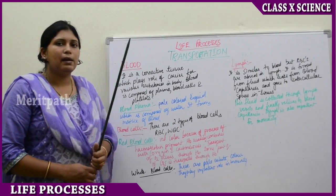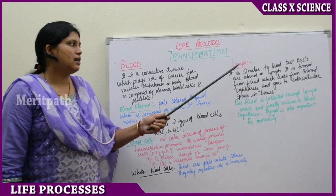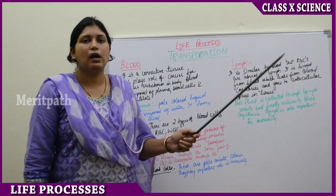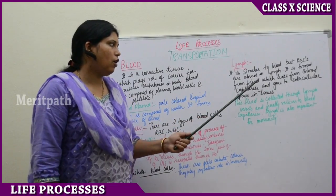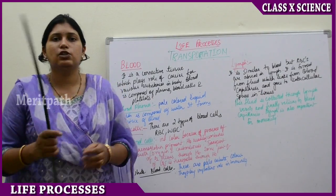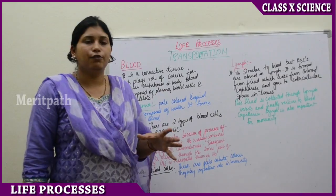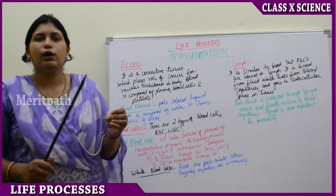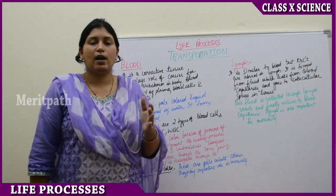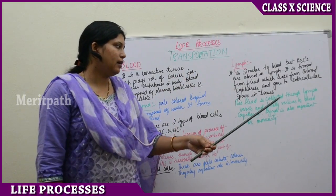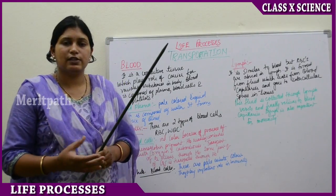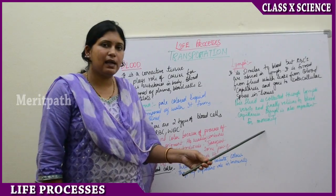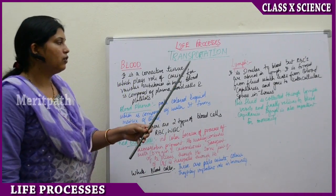Platelets are important for the coagulation of blood. Lymph is similar to blood but RBCs are absent, giving it no red color. It is formed from fluid that leaks from blood capillaries and goes into the intercellular spaces between tissues. This fluid is collected through lymph vessels and lymph nodes, and is finally returned to the blood capillaries. Lymph also plays an important role in immunity. This concludes the topic of transportation as a life process.